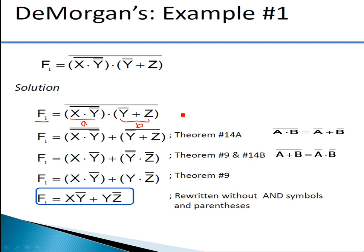De Morgan's first theorem states that the complement of a product is equal to the sum of the complements of the individual variables — that is, (a · b)̄ = ā + b̄. Here, 'a' is (x · ȳ)̄ and 'b' is (ȳ + z).